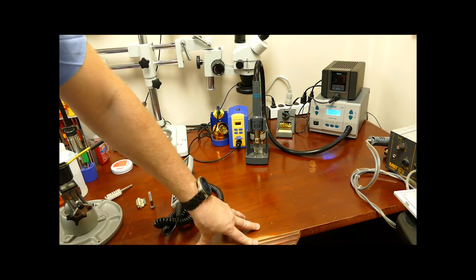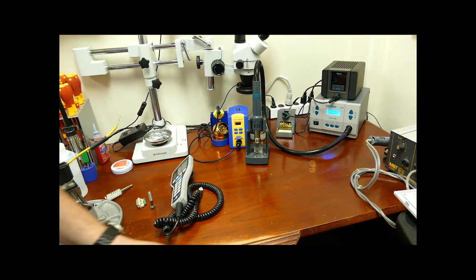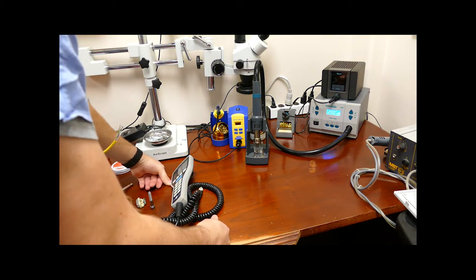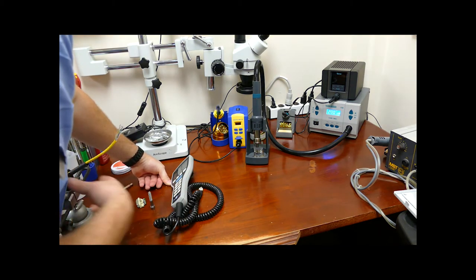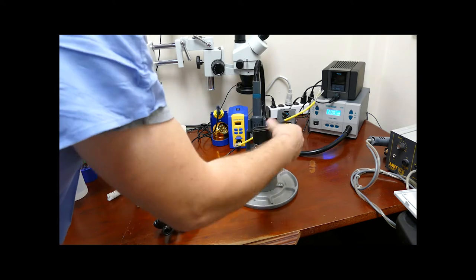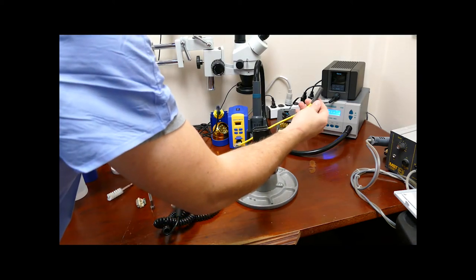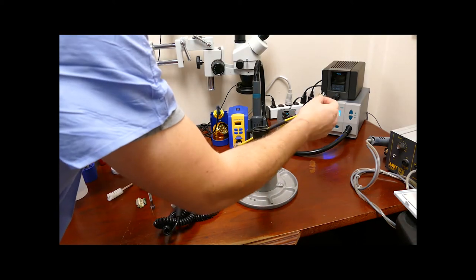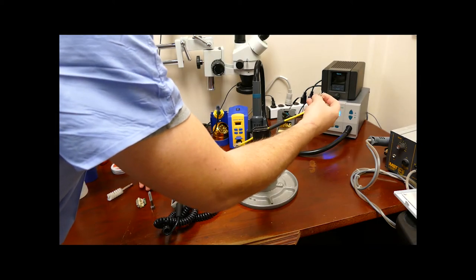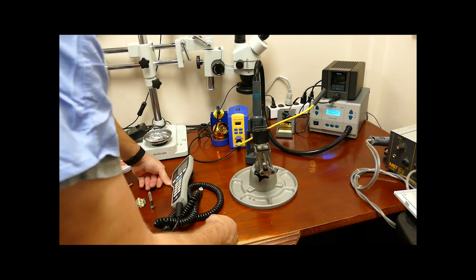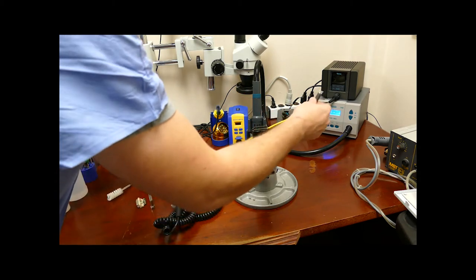Now you might be asking, why would somebody use a hot air station? I use 200 degrees most often for doing heat shrink tube, like when I'm doing a cable such as this. I'll seal every single wire with its own individual shrink tube, and then I'll seal it all together with one large tube at the very end.